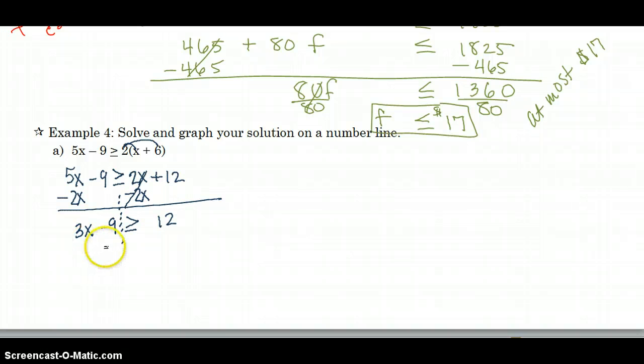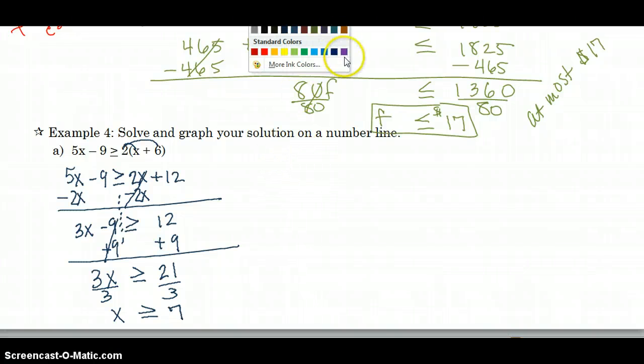Now, since x is on the left, I need to take 9 to the other side. When we take 9 to the other side, 3x stays over there, greater than or equal to 21. And now to get x by itself, I'll divide by 3. And x looks like it's going to be greater than or equal to 7. But I'm going to check my solution just to be sure.